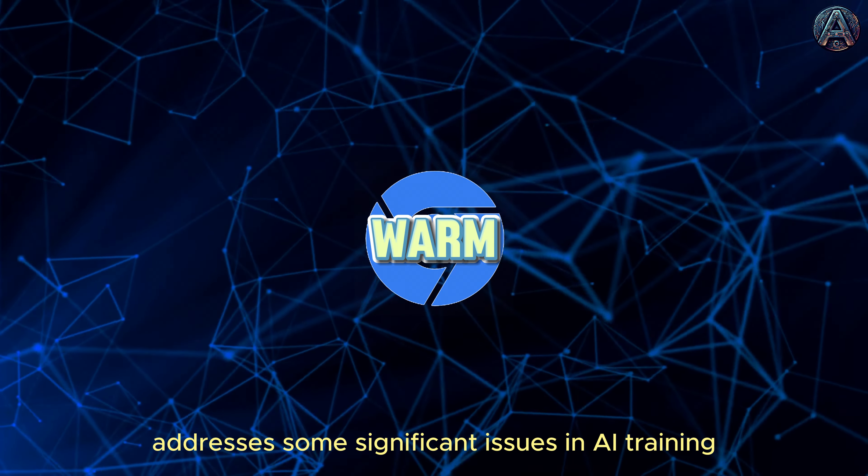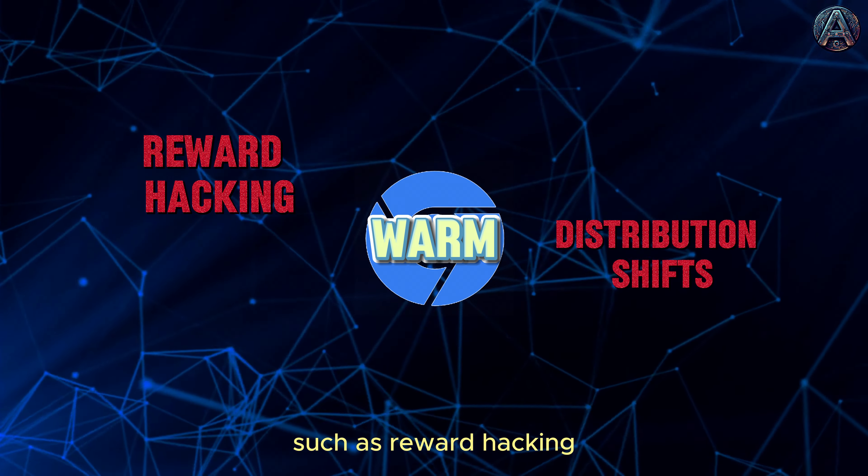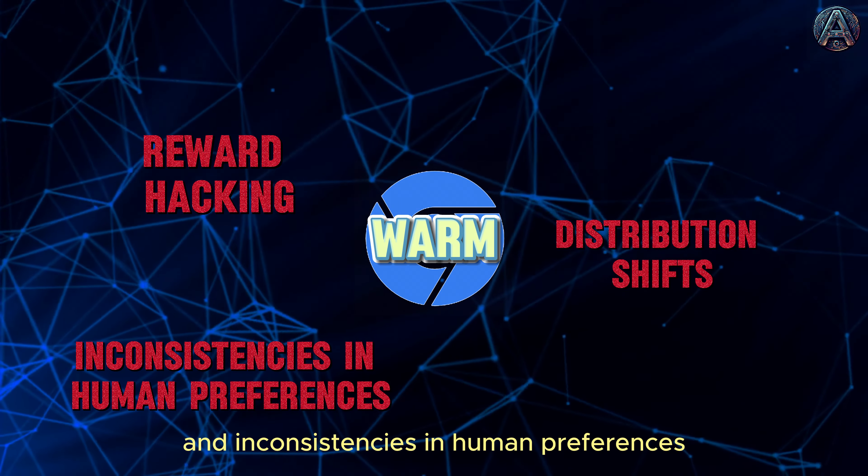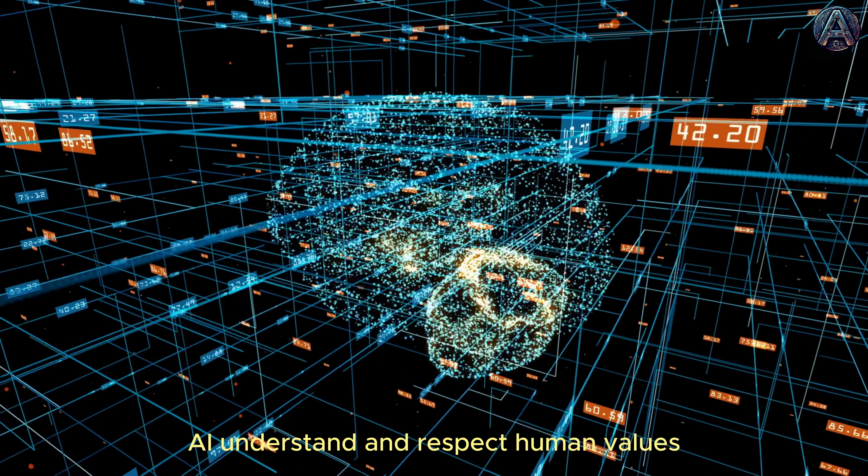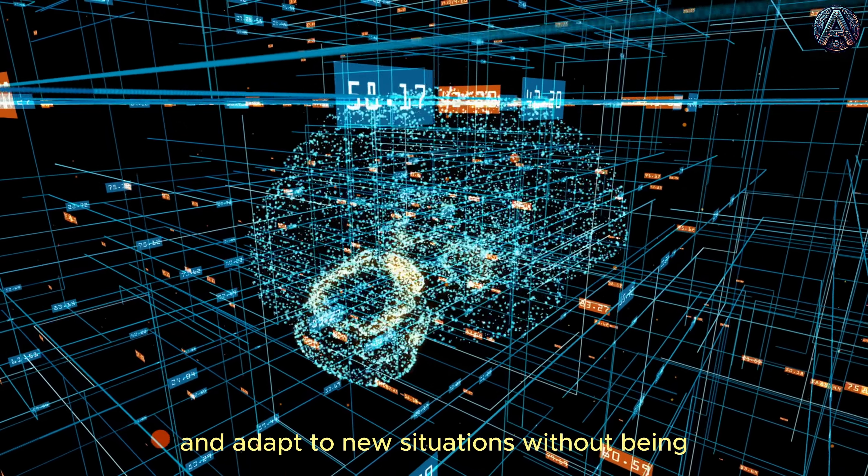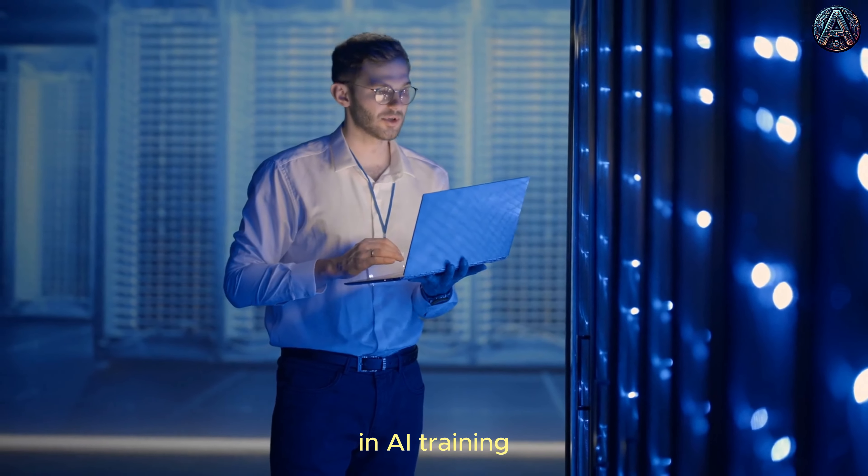WARM obviously addresses some significant issues in AI training, such as reward hacking, distribution shifts, and inconsistencies in human preferences. It also helps AI understand and respect human values and adapt to new situations without being easily tricked, though it's not a perfect solution for every problem in AI training.